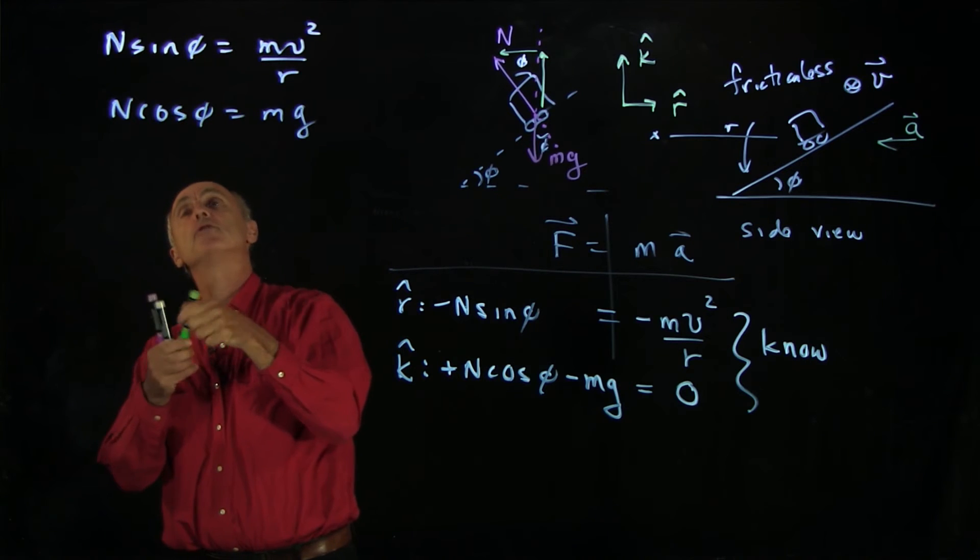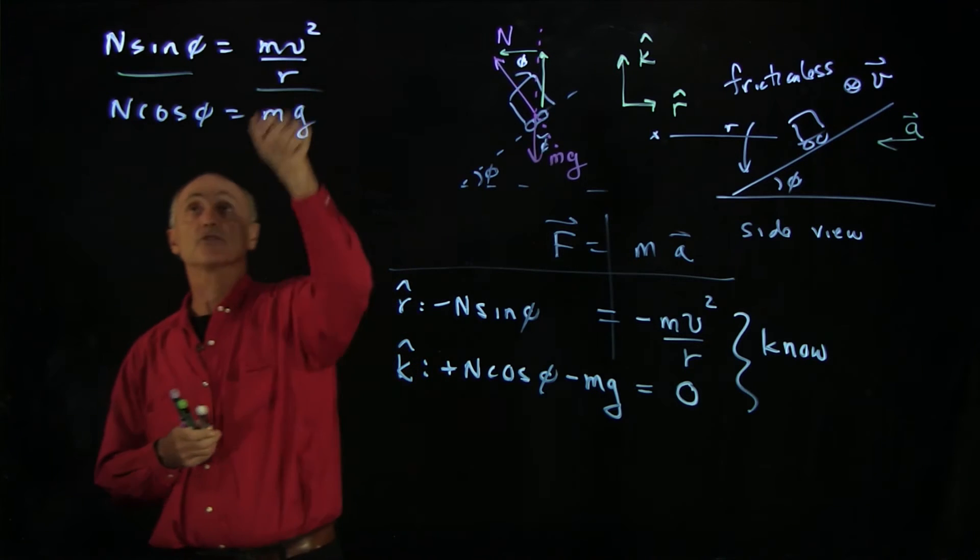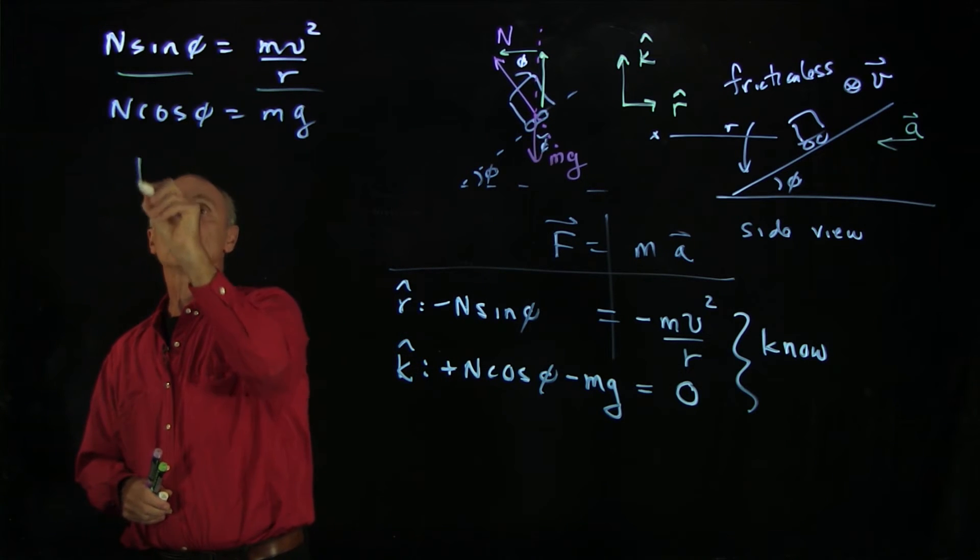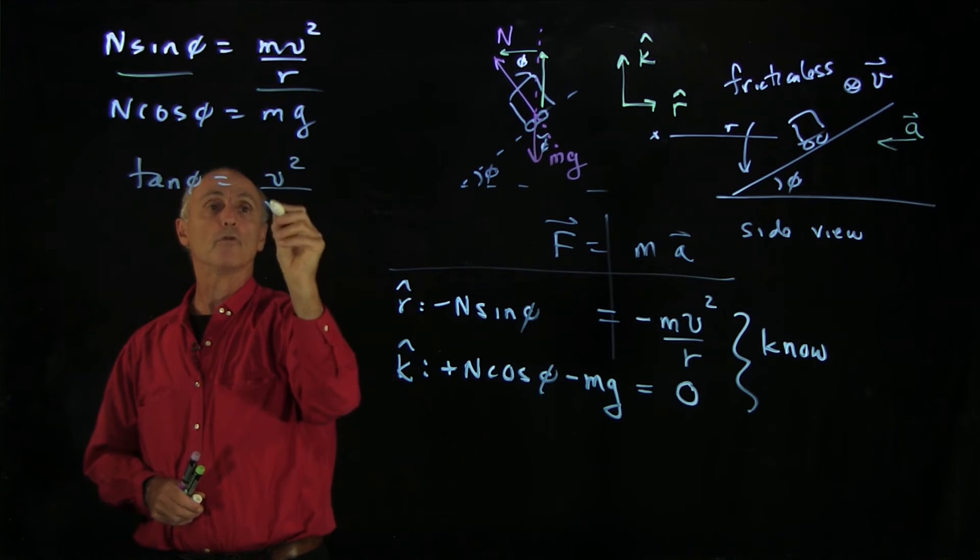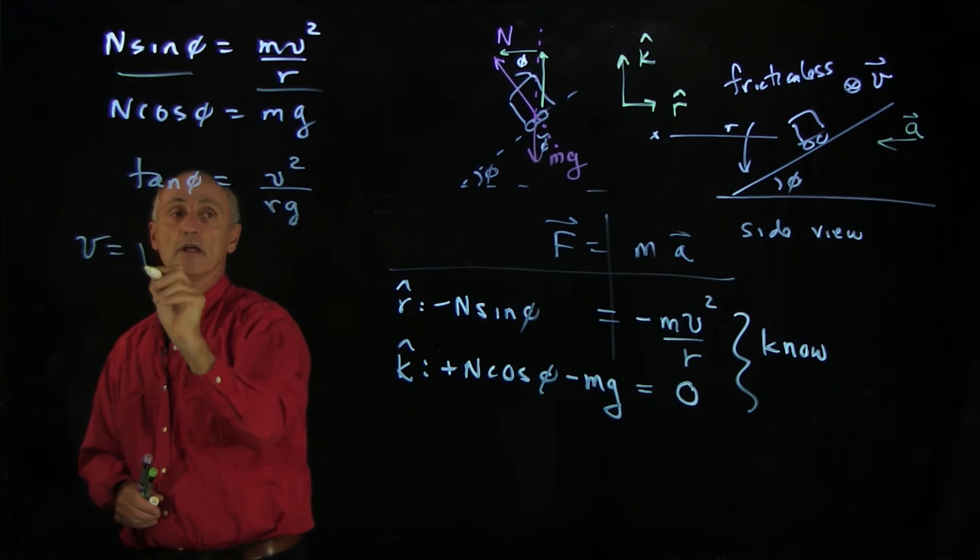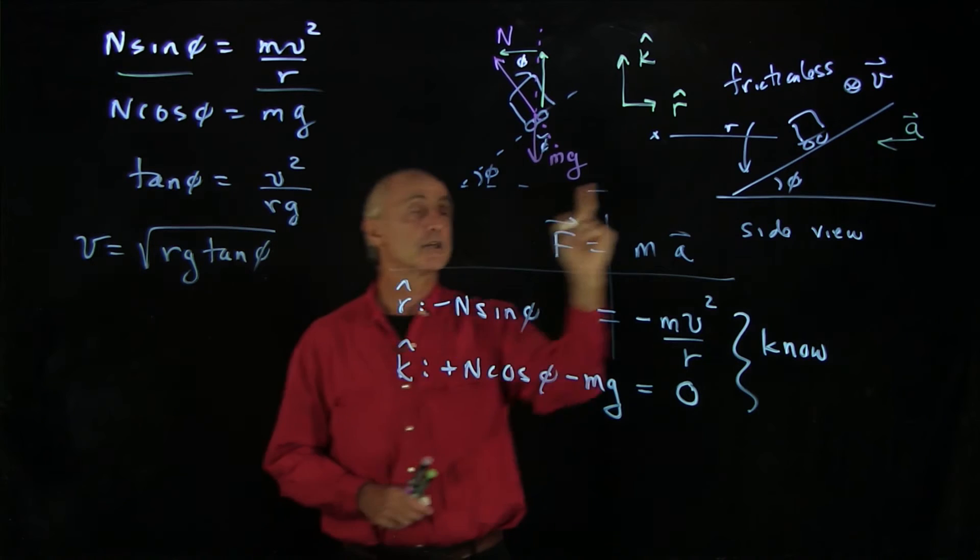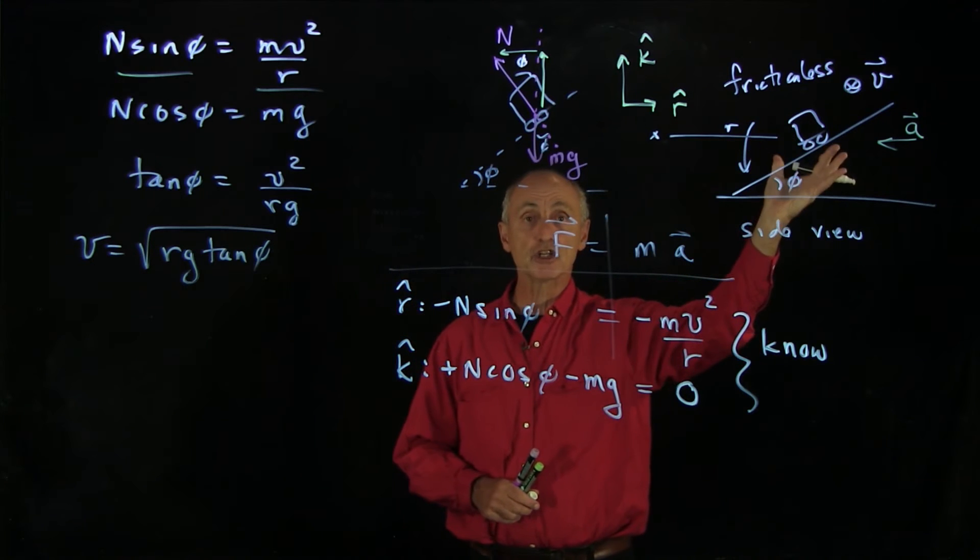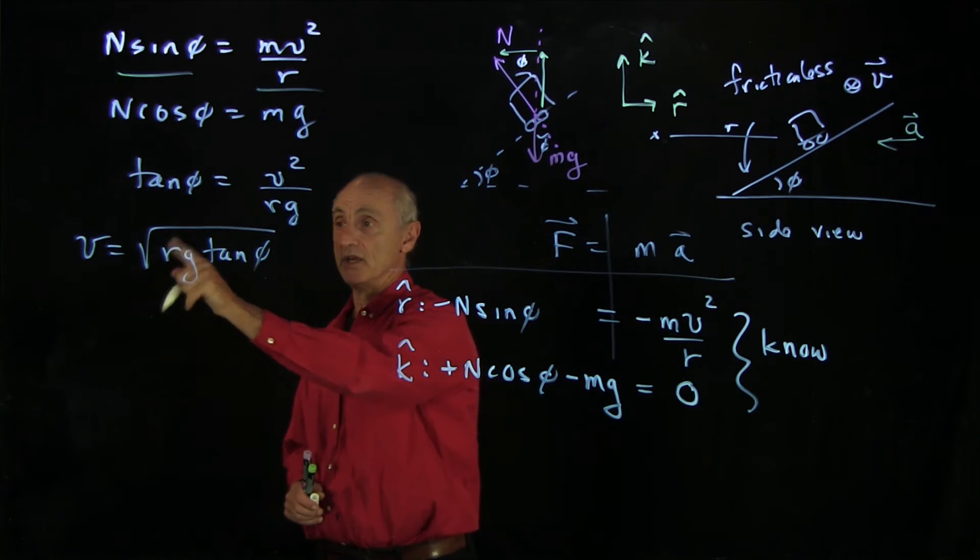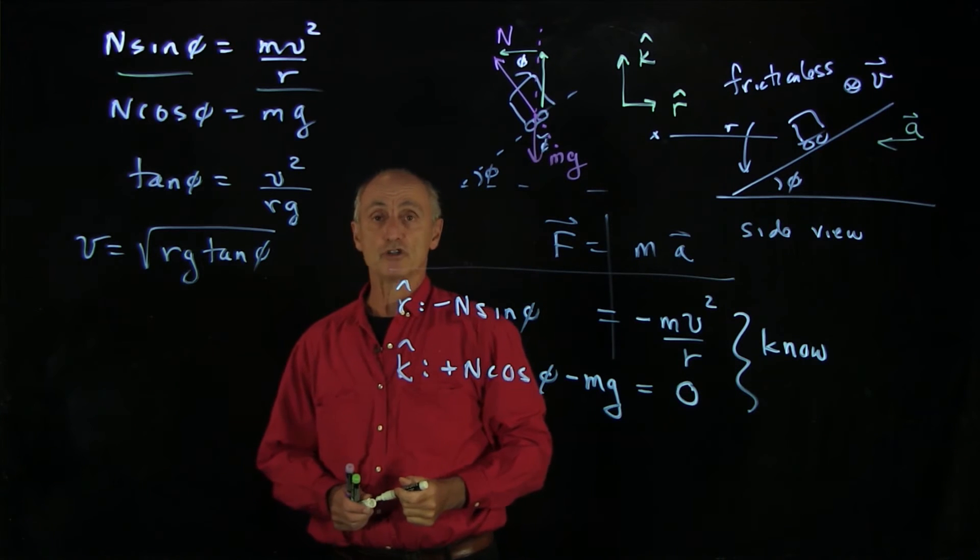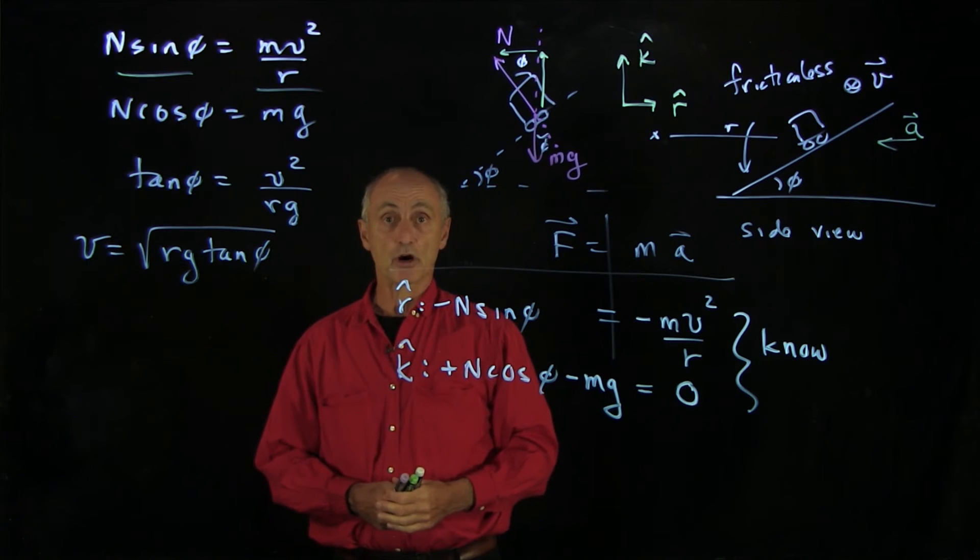That's much easier. The masses cancel, and we get the relationship that tan phi is v squared over rg. So we have our result that the speed that the car can travel on a frictionless inclined plane and maintain uniform circular motion is exactly the square root of rg tan phi. And that's how we analyze the motion of this car in a banked turn.